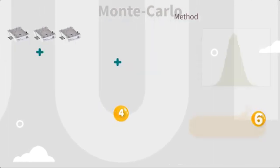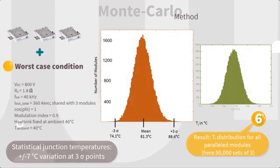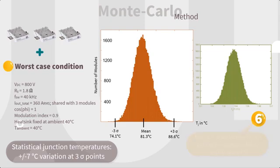The result is a plot of the normal distribution of junction temperatures. Here, the statistical junction temperatures show a plus minus seven degrees Celsius variation at three sigma points under high load conditions.